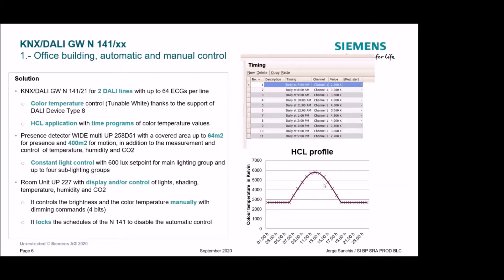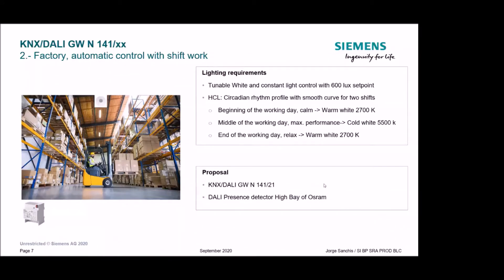The second use case is very similar, but it's a factory with two work shifts. Again, tunable white and constant light control are required. We want the same smooth curve, but for two shifts. In this case, the customer doesn't want KNX presence detectors — they want DALI presence detectors. We can do that as well. The proposal is to use our KNX-DALI Gateway Plus and the DALI presence detector high bay from OSRAM — so it's a DALI detector, not a KNX detector.